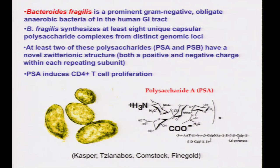Bacteroides is a very unique organism. People like Dennis Casper and Lloyd Comstock have shown that Bacteroides expresses multiple capsular polysaccharides within each genome, which is very rare — most bacteria express one capsular polysaccharide per genome. Two of these have a very unique structure, being both positively and negatively charged within each subunit. The molecule we focused on is polysaccharide A, PSA, because it was previously shown that PSA induces CD4-positive T cell proliferation.